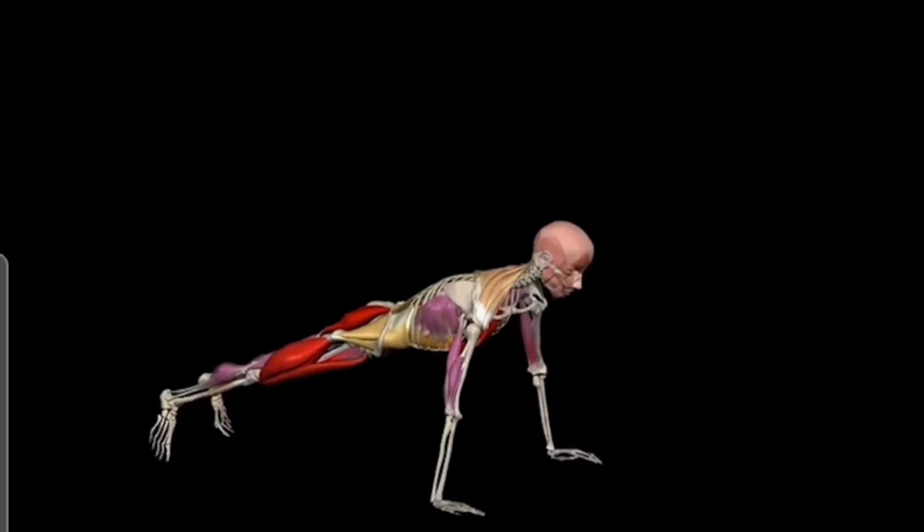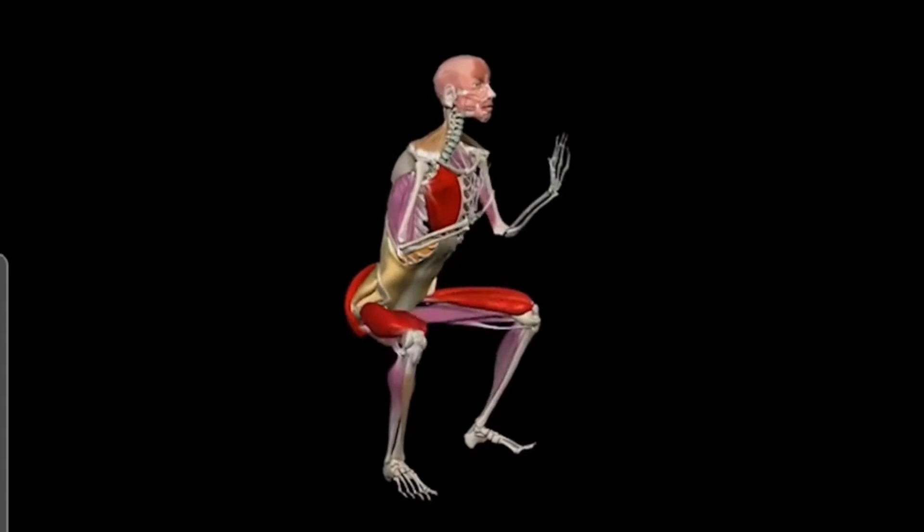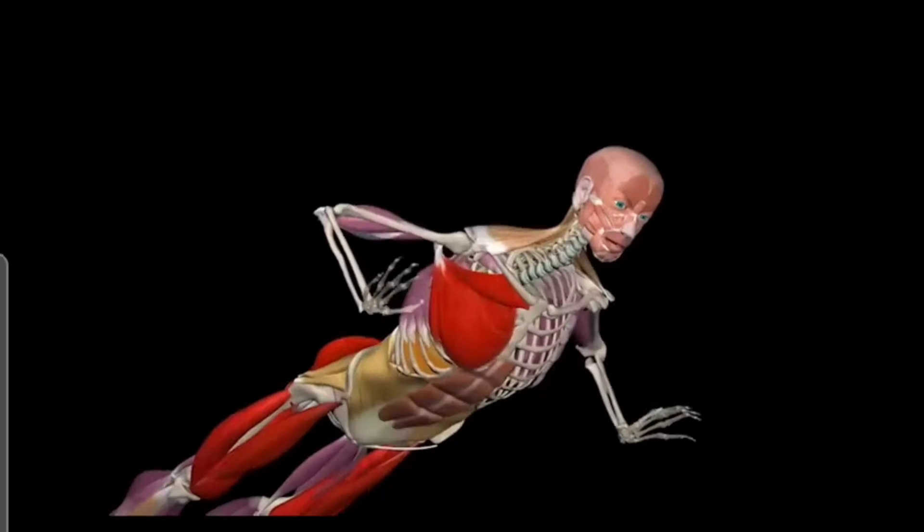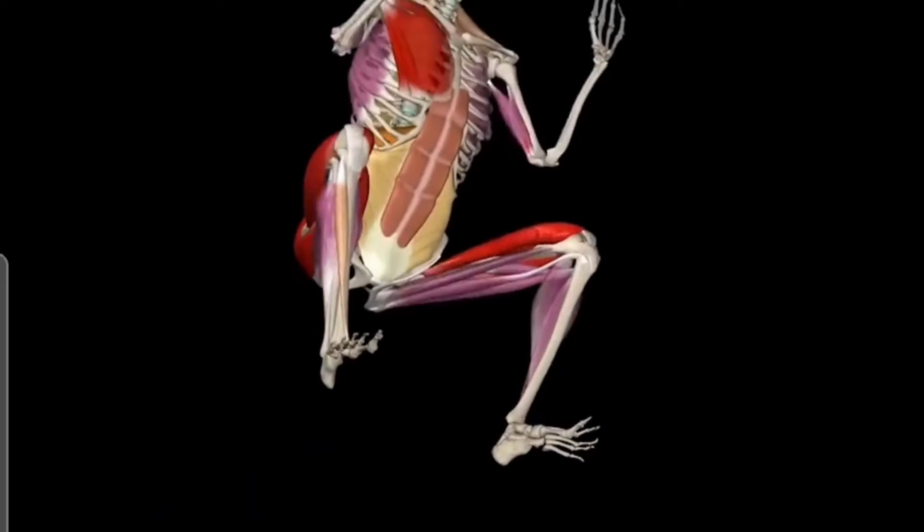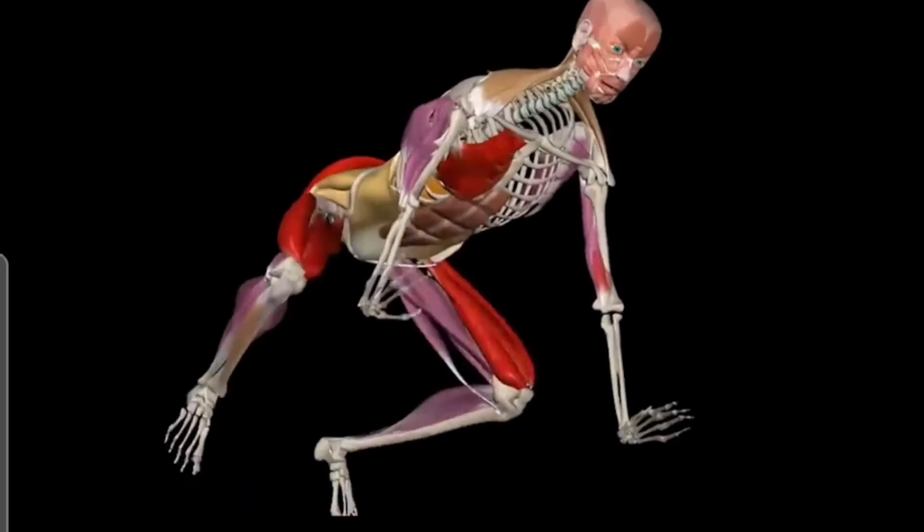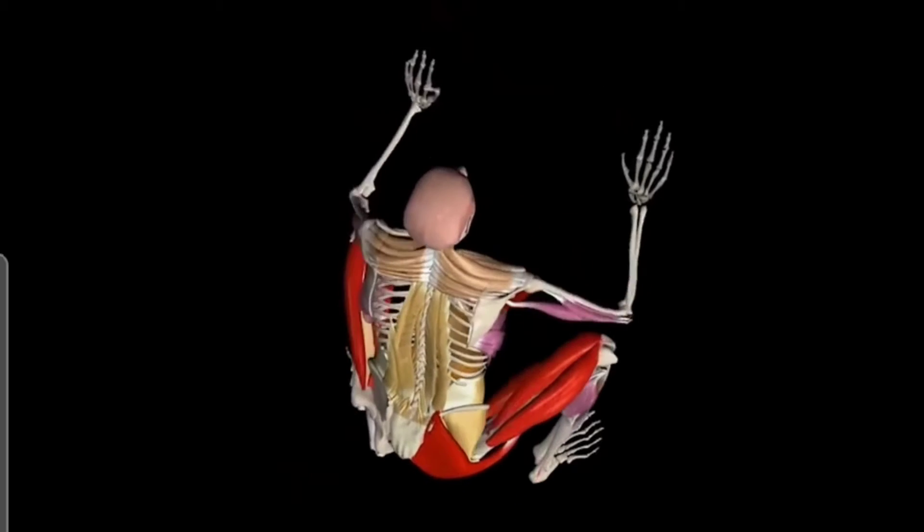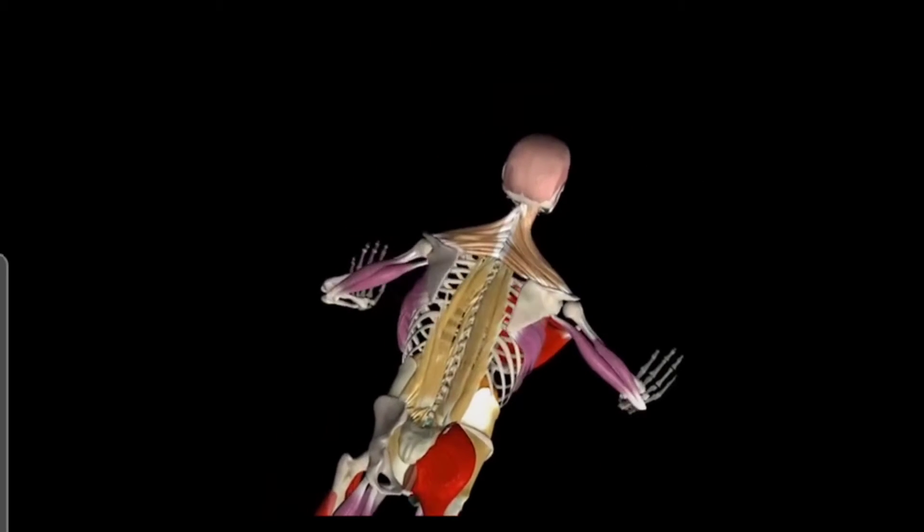The third step is the squat, where the target muscles are the quadriceps femoris and the gluteus maximus. The last step is the jump, where the dominant muscles are the gastrocnemius in the plantar flexion. Note that all the muscles mentioned are also active eccentrically on the way down.